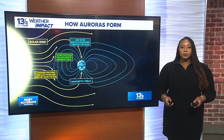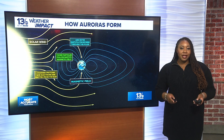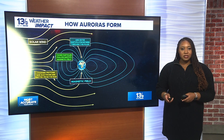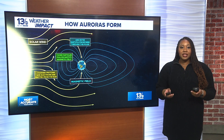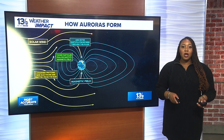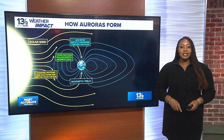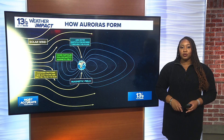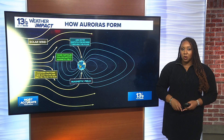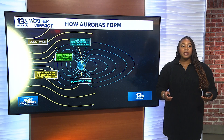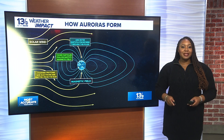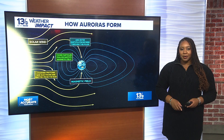Solar wind blows the protons and electrons towards the Earth. Then the particles follow Earth's magnetic field and enter the atmosphere through the North and South Poles, sparking a geomagnetic storm.